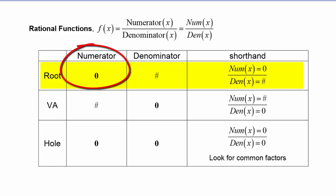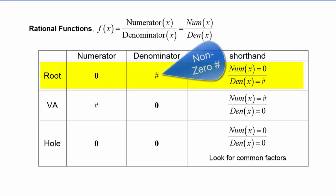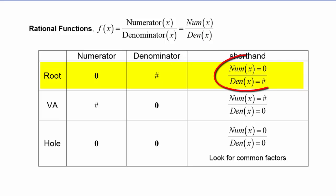A root will occur when the numerator is equal to zero but the denominator is not zero — it actually equals a number. The shorthand way to think about it is: the numerator is zero but the denominator is not zero, so you can think of it like zero over a number.